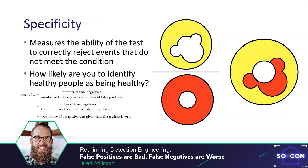Specificity is a metric in binary classification that measures the ability of the test to correctly reject events that do not meet the condition — in other words, how likely are you to identify healthy people as being healthy? True negatives are represented as a yellow shape and condition negative as a red shape. It is important to note that sensitivity and specificity are independent of each other, but with imperfect knowledge it can be difficult to completely divorce these metrics.